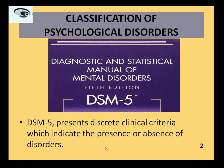The American Psychiatric Association (APA) has published an official manual that describes various kinds of psychological disorders. The current version, visible on screen, is the DSM-5. It also helps in understanding the discrete clinical criteria that indicate the presence or absence of any kind of disorder.